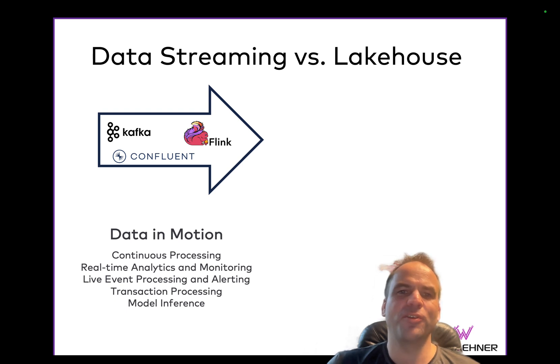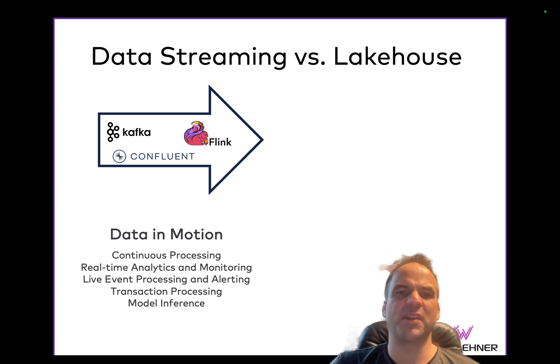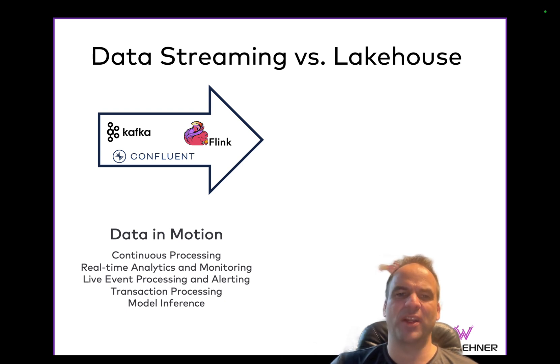This is also not just for analytics — it's also for transactional processing like a payment, an order, and similar scenarios. That's also why many core banking platforms, or MES and ERP systems, are built on top of Kafka and Flink under the hood. As an end user, you often don't see that because you buy a product or cloud service, but this is how you build transactional systems today: reliable, scalable, elastic, and real-time.